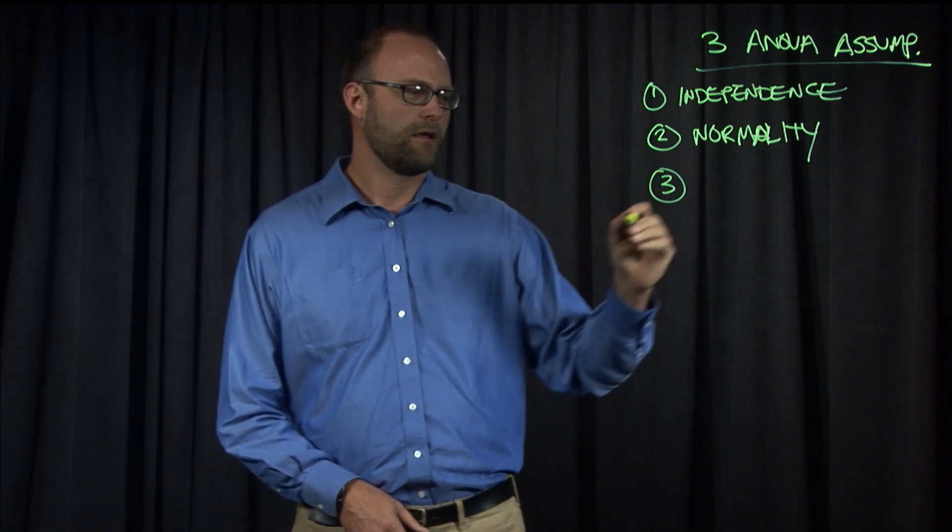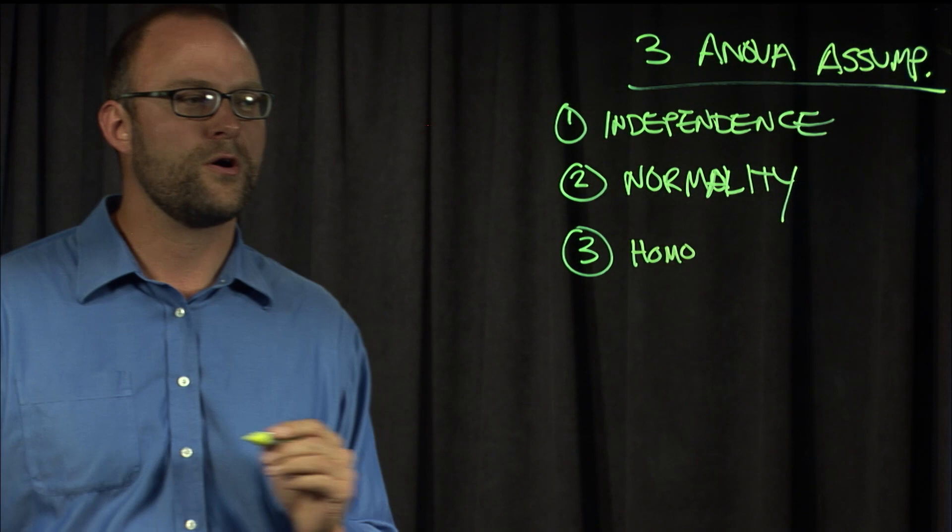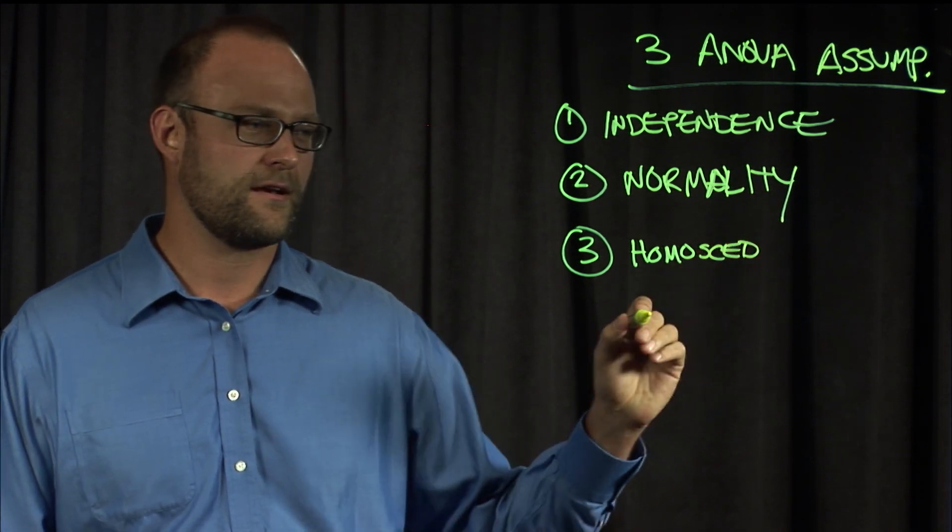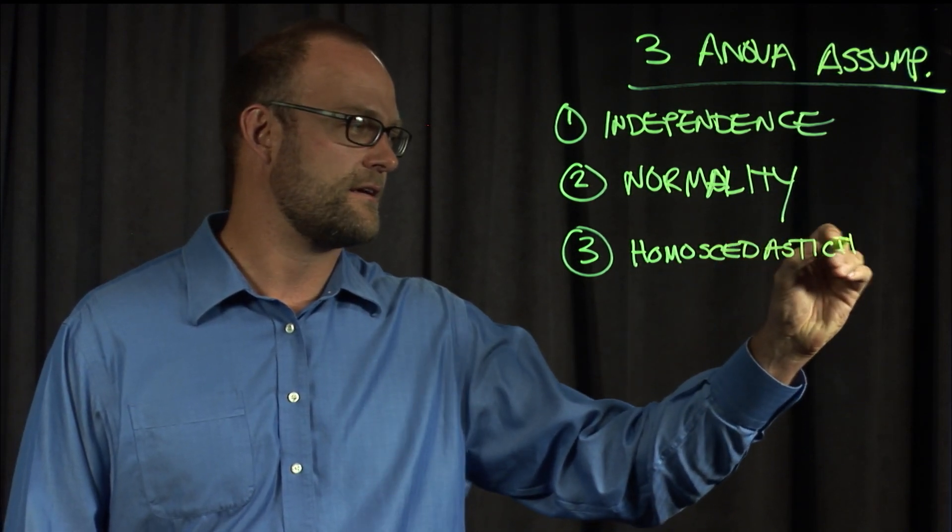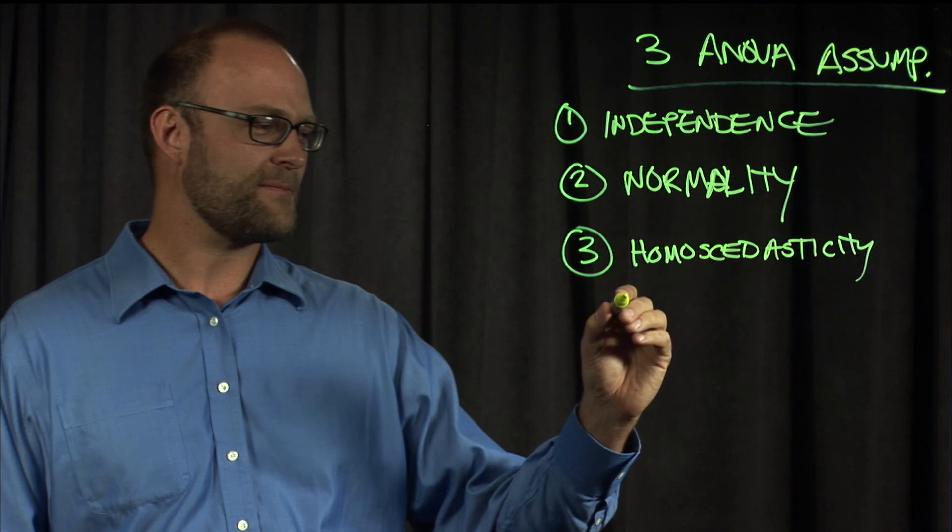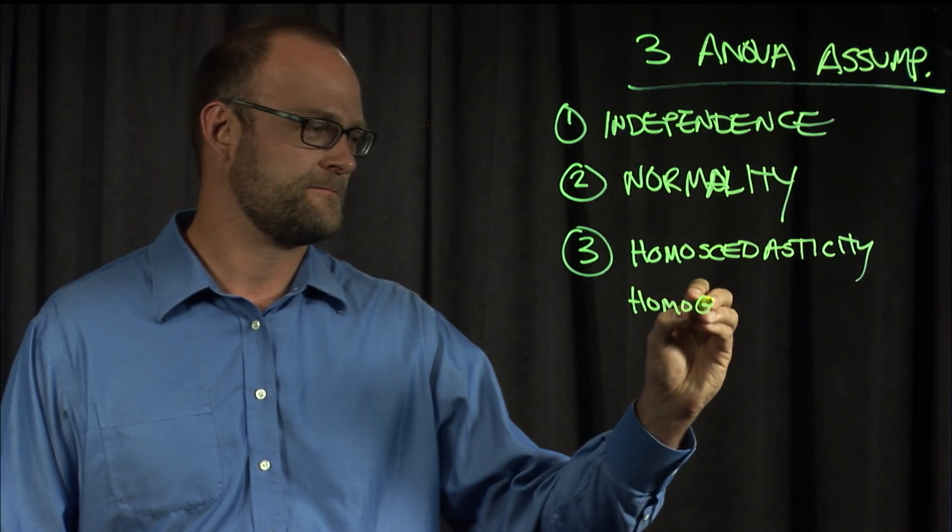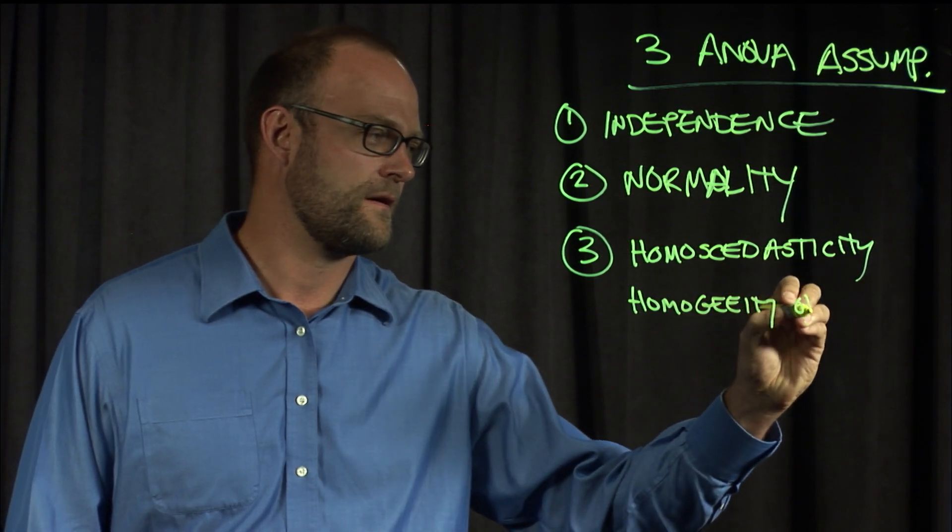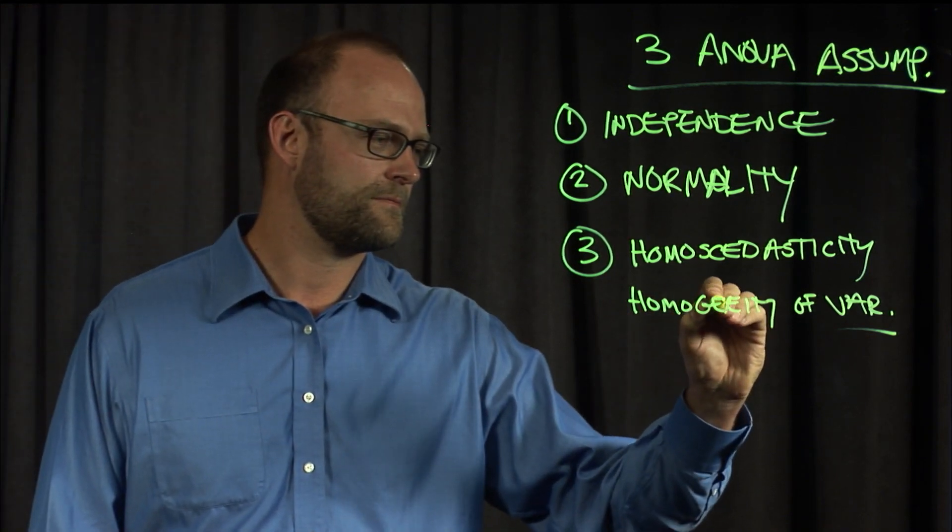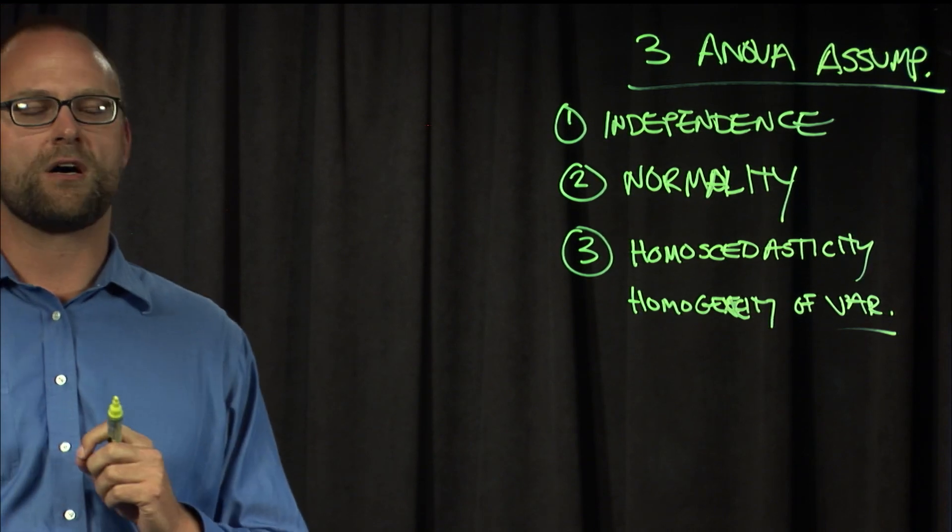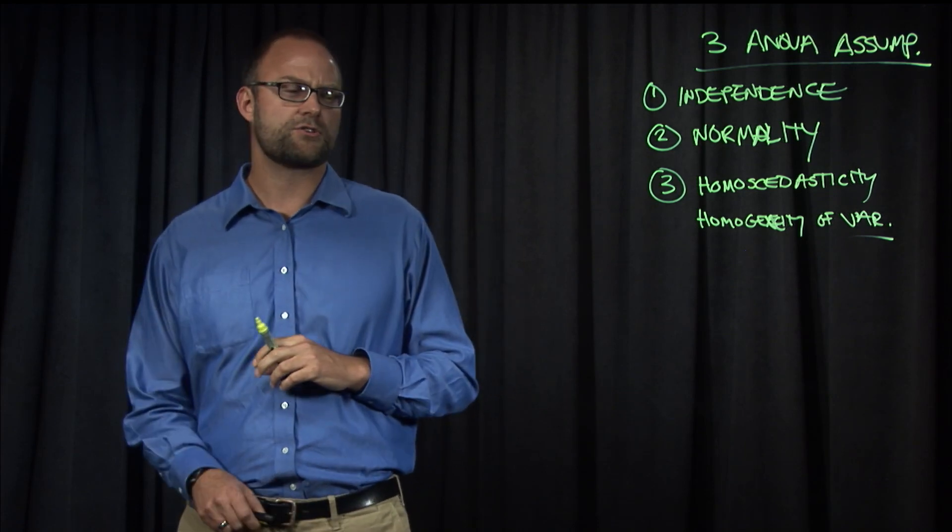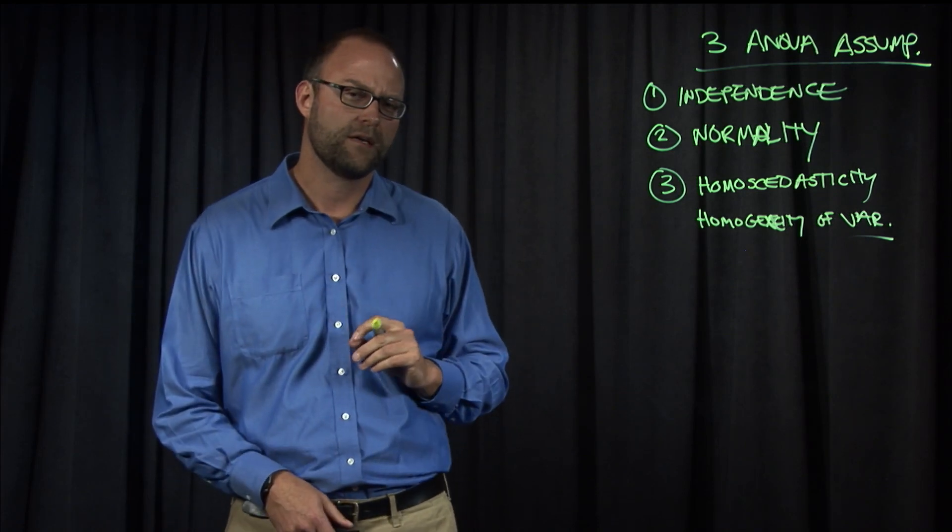The third assumption is what's called homoscedasticity. I know that's a challenging word. I'll write it up here. Homoscedasticity. The adjective is homoscedastic, and it's sometimes more easily called homogeneity of variance. What that means is that the variance among groups being compared is similar. You can think of those box plots. Is the spread of the measures in each of those conditions similar or very different? That's what that assumption refers to.